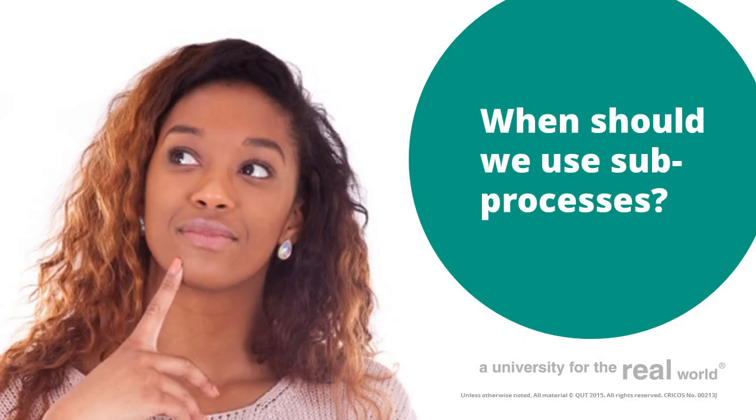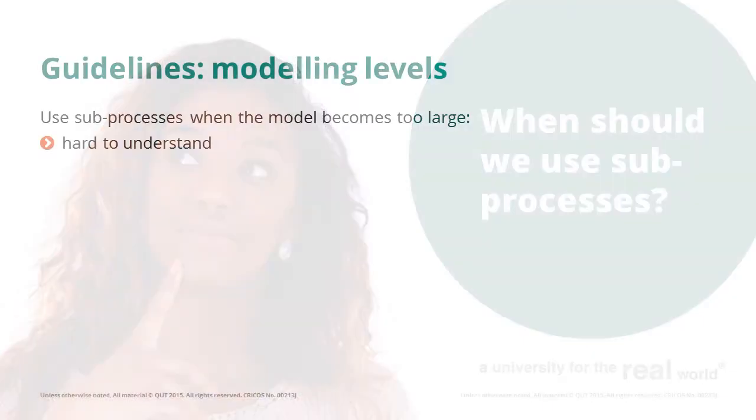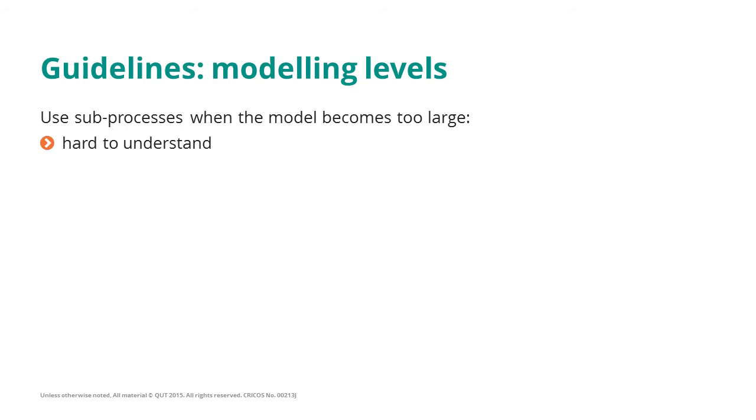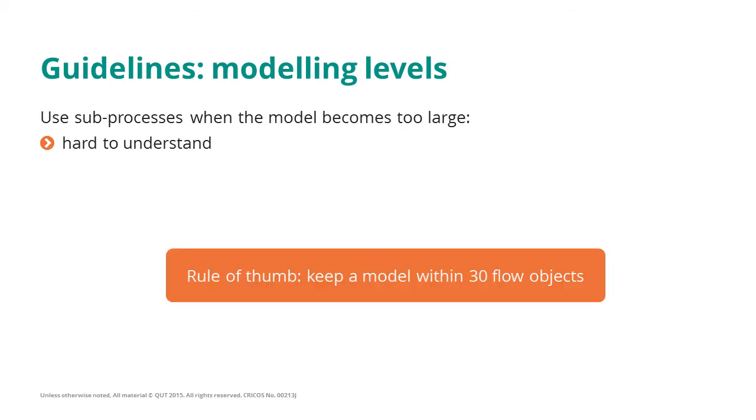The idea is to use subprocesses when the model starts becoming hard to understand, when there are too many modelling constructs. As a rule of thumb, we should not go beyond 30 flow objects, where flow objects are activities, events, and gateways.